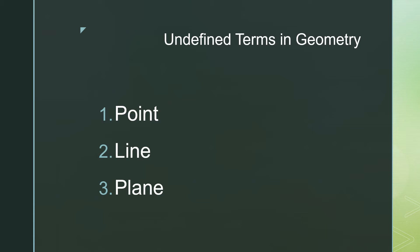We have here the undefined terms in geometry. There are 3 undefined terms in geometry. When we say undefined, we cannot define each term, but we can describe every term. The three undefined terms are: number 1 is point, 2 is line, and 3 is plane.